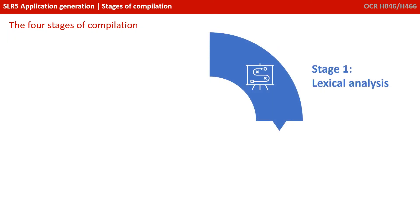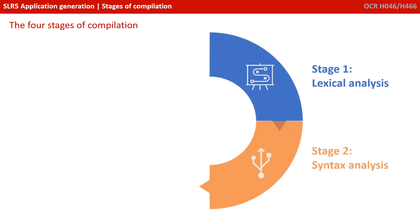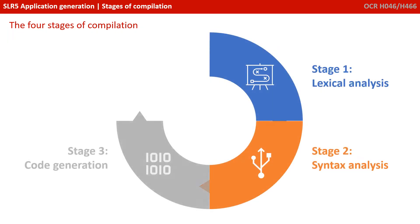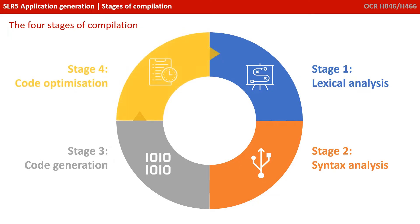The four stages of compilation you're required to know about are: lexical analysis, syntax analysis, code generation and code optimisation. Let's look at them now in a little more detail.